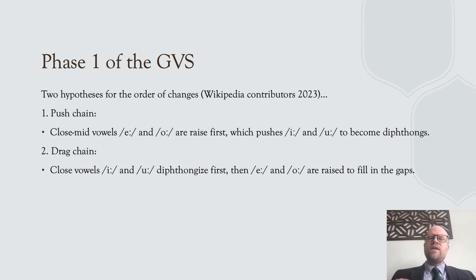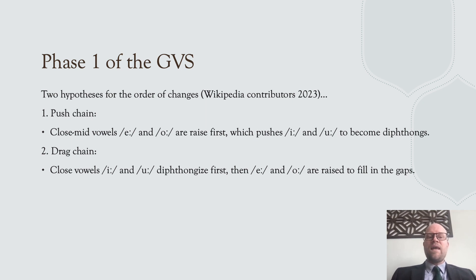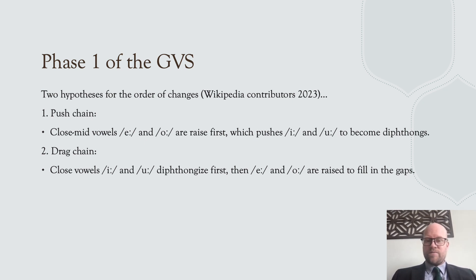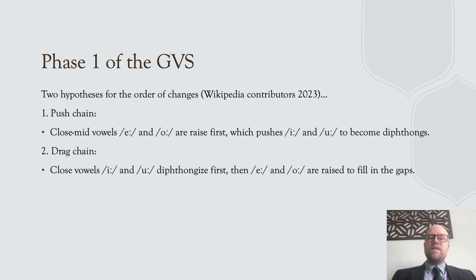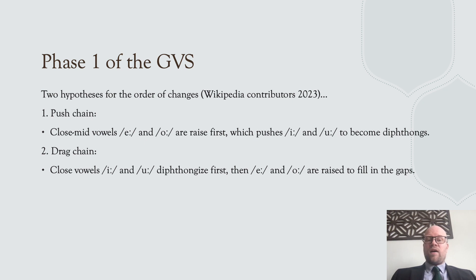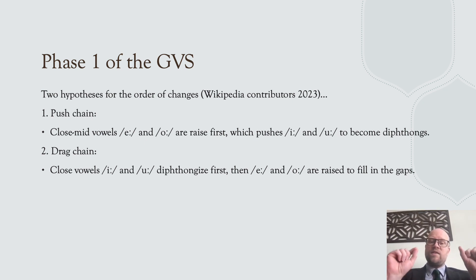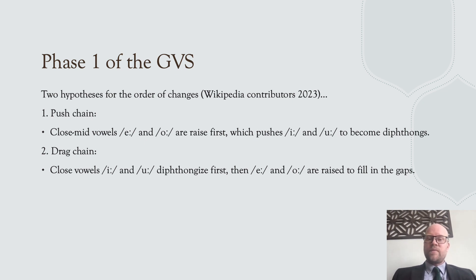For phase one, we can propose two hypotheses about directionality: was it a push chain or a drag chain? In a push chain, the close-mid vowels 'a' and 'o' were raised first, pushing 'e' and 'oo' to become diphthongs. Alternatively, did 'e' and 'oo' diphthongize first, dragging 'a' and 'o' to fill those gaps and become 'e' and 'oo'? There are different theories on how this worked.